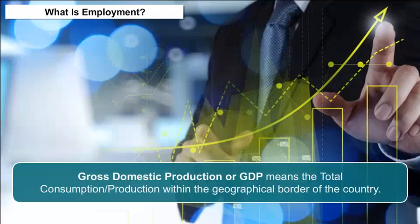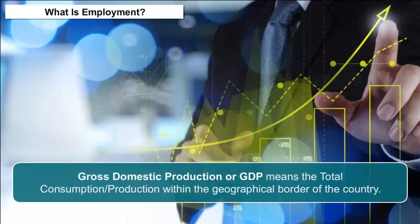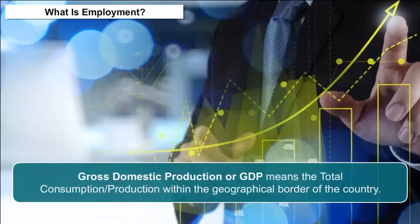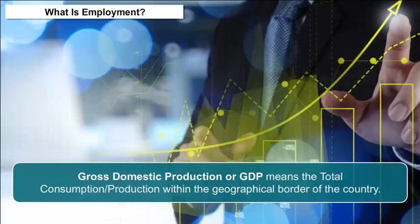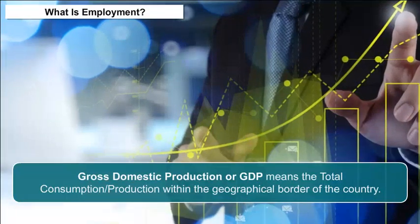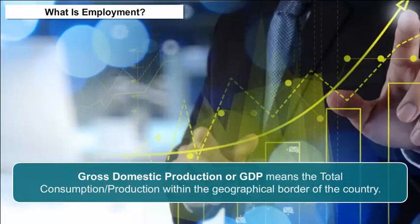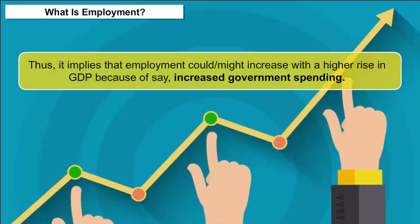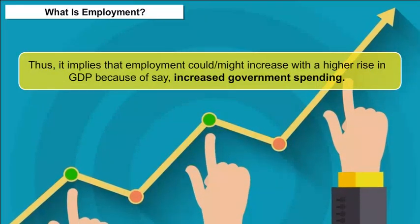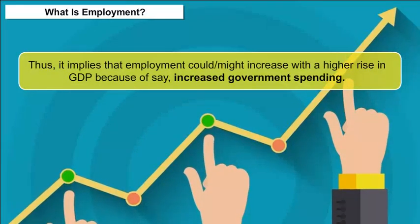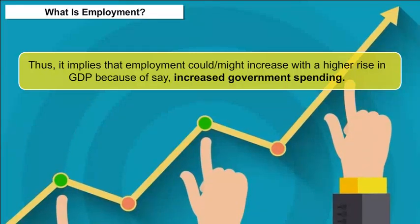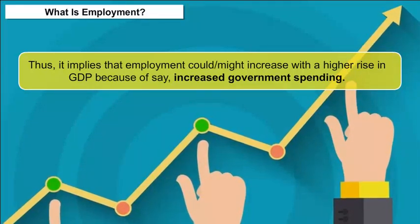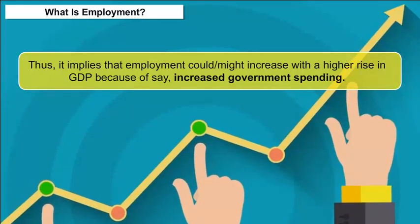Gross Domestic Production, or GDP, means the total consumption or production within the geographical border of a country. Thus, employment could or might increase with a higher rise in GDP because of, say, increased government spending.